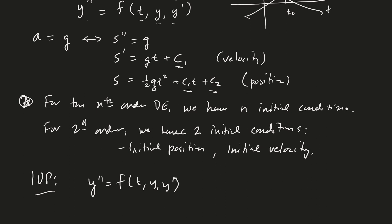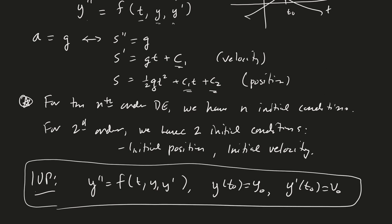So the IVP in this case then would look like y double prime is some expression in t, y, y prime. Then you would have like y of t0 equals y0 and y prime of t0 being v0. So this is the generic second order initial value problem.